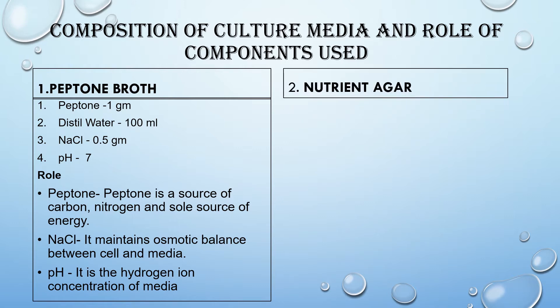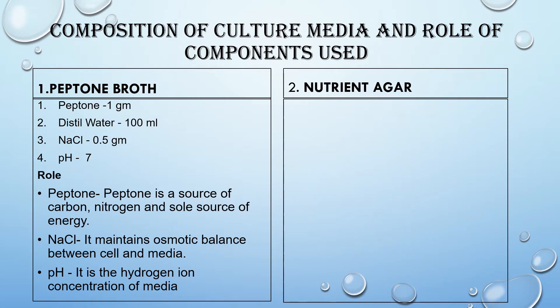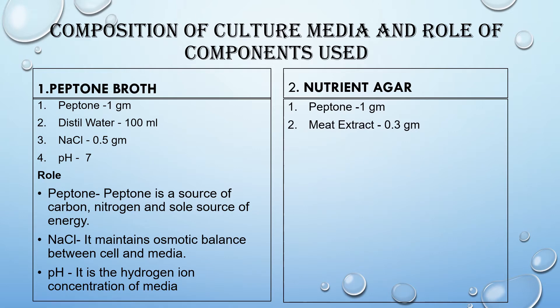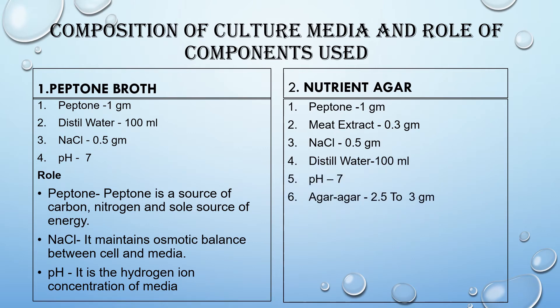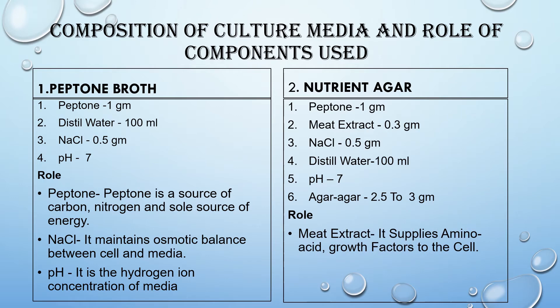The second one is nutrient agar, the most commonly used media. Composition: peptone 1 gram, meat extract 0.3 gram, NaCl 0.5 gram, distilled water 100 ml, pH 7, and agar agar 2.5 to 3 grams. Role of ingredients: meat extract supplies amino acids and growth factors to the cell; agar agar is a solidifying agent used to solidify the media.